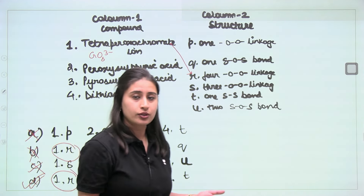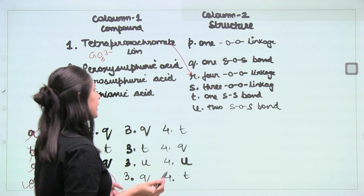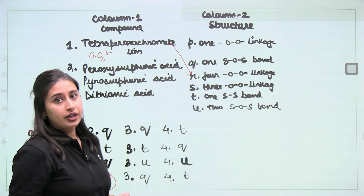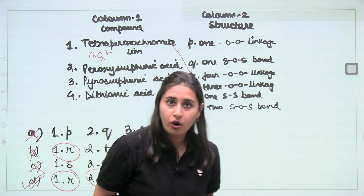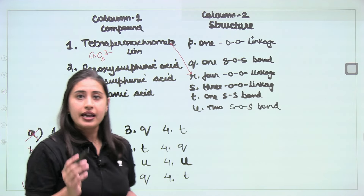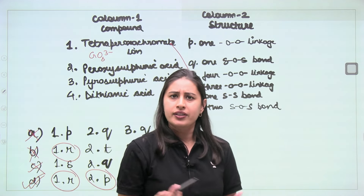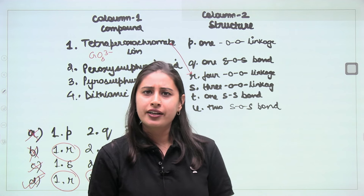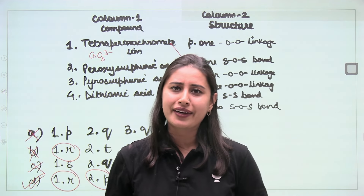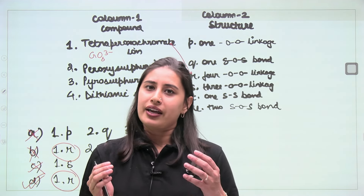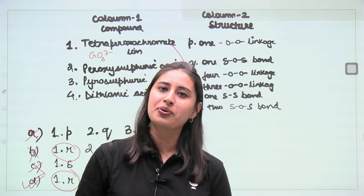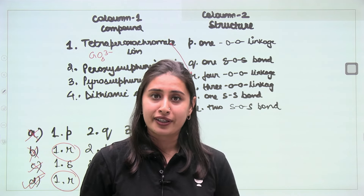To summarize the question answers: tetraperoxochromate has 4 peroxy linkages (from the name); peroxysulfuric acid has 1 peroxy linkage (from the trick); pyrosulfuric acid has an S-O-S oxy bond; dithionic acid has an S-S bond. Try many different molecules with this trick — but note there are exceptions, so keep those in mind.